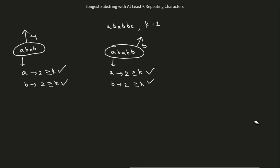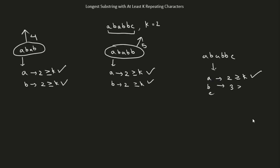Now what if we take the entire string as our substring? A, B, A, B, B, C — it has three unique characters. A occurs twice, B occurs three times — both greater than or equal to k. But C occurs once, which is not greater than or equal to k. So this does not meet our requirements, and we return zero. The longest valid substring is length 5, so we return five.